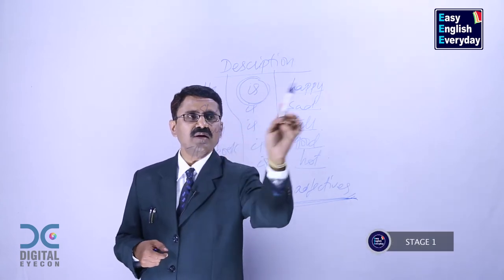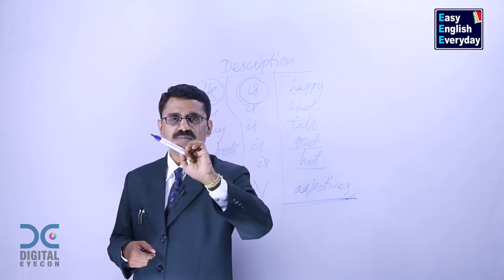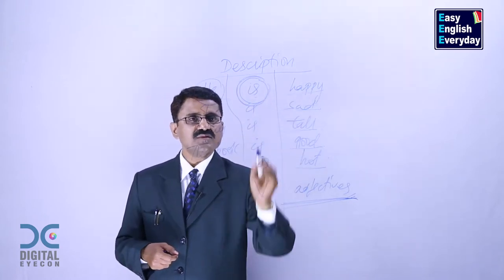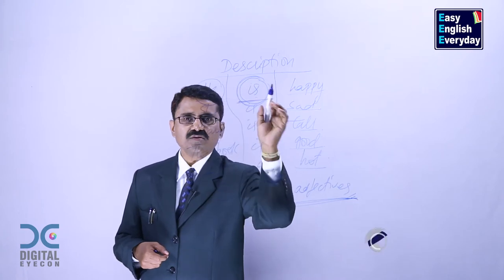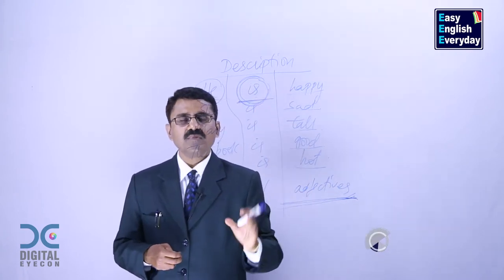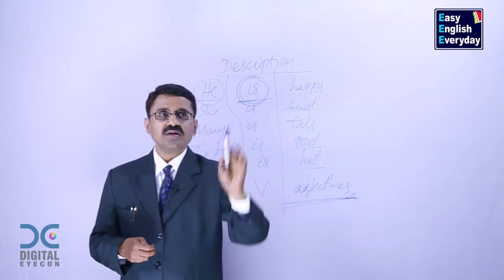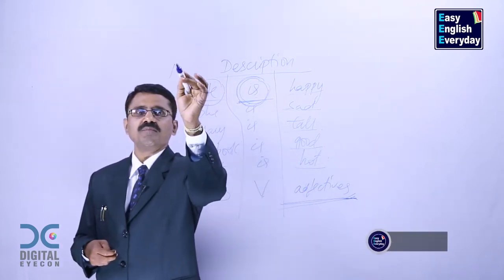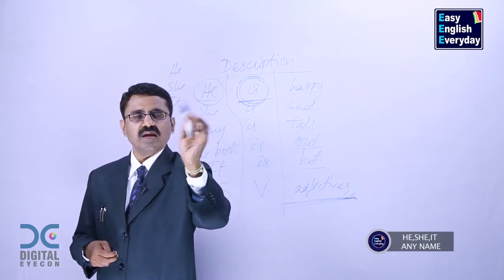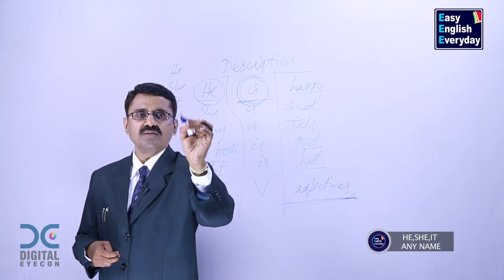How have we made the sentences? We have taken a subject. We have taken 'is'. And we have added adjectives. Now, 'is'. It is called an auxiliary verb. You can call it a main verb. Or you can call it a technical word. This goes only with four people. He, she, it, any singular name like John.